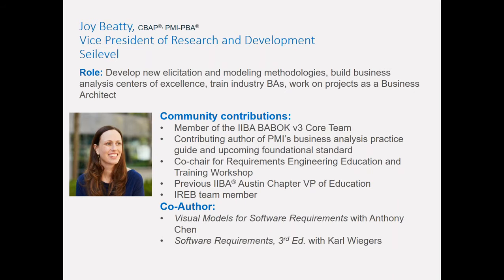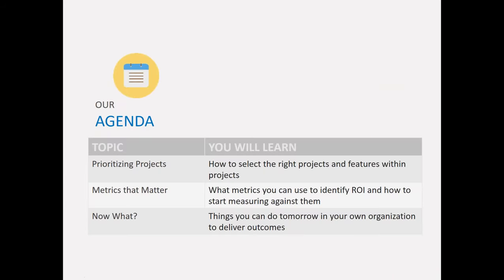Here's a quick look at what we're going to cover today. I'll start with how do you understand what the right projects are to do, and then once you know the right projects, how do you know what features to prioritize within those projects? Then we'll spend time on metrics — specifically what metrics can you use to identify ROI — and then wrap up with takeaways you can start using tomorrow on your projects.